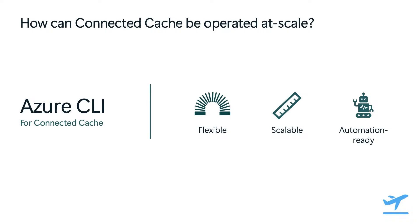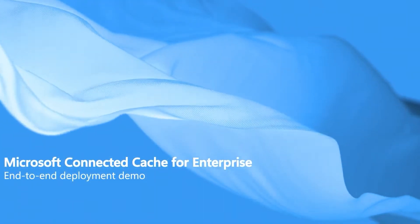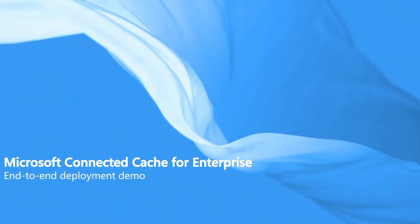A common question we get from customers is how can Connected Cache be operated at scale, say if I have multiple sites or thousands of devices that all need to be served by a Connected Cache node? Here, we're proud to support Azure CLI, or command line interface, for Connected Cache. Azure CLI is flexible, scalable, and automation ready. You simply need to install the Connected Cache Azure CLI extension, and you'll be able to create, configure, deploy, and delete multiple cache nodes at once. Now we'll move on to a demonstration that shows what end-to-end deployment could look like at scale.